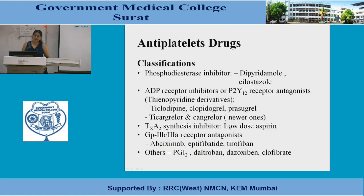Classification of antiplatelet drugs: first, phosphodiesterase inhibitors — dipyridamole and cilostazol; second, ADP receptor inhibitors or P2Y12 receptor antagonists, which are thienopyridine derivatives — ticlopidine, clopidogrel, prasugrel, ticagrelor, and cangrelor (the latter two being newer agents); third, thromboxane A2 synthesis inhibitors — low-dose aspirin; fourth, GP2b3a receptor antagonists — abciximab, eptifibatide, and tirofiban. Other drugs include prostacyclin I2, daltroban, doxibane, and clofibrate.